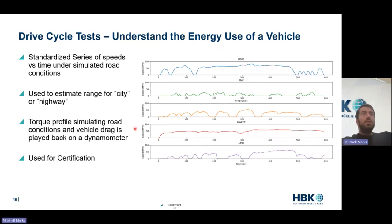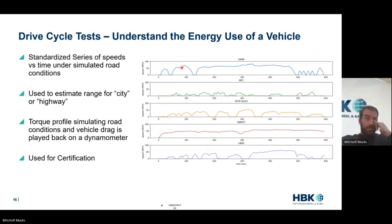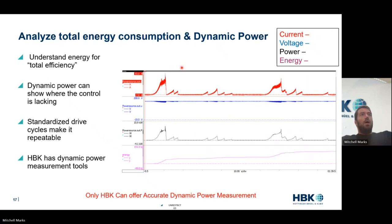We characterize the vehicle using a chassis dynamometer to simulate torque, and often certification is done this way. But these drive cycles have no steady state — they're constantly changing speed. So why don't we characterize and understand the vehicle as we're changing these speeds? We can optimize our control and increase range by using these types of measurements. HPK is incredibly good at this, and we can analyze total energy consumption and dynamic power very well.